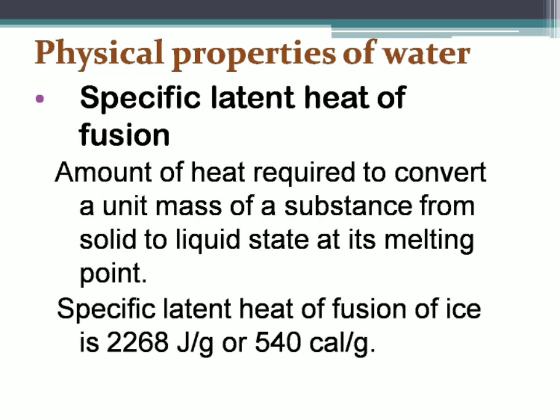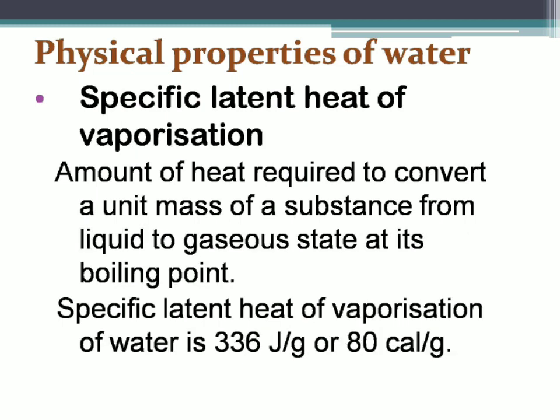To convert one gram of ice into liquid water at zero degrees Celsius, we need to supply an energy equal to 80 calories. The specific latent heat of vaporization is defined as the amount of heat required to convert a unit mass of a substance from liquid to gaseous state at its boiling point. To convert one gram of liquid water into water vapor at 100 degrees Celsius, we have to supply an energy of 540 calories. Consider two things: liquid water at 100°C and water vapor at 100°C — which stores more energy?